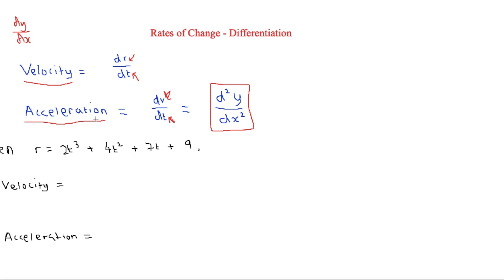So here we have a question, and that's when r, which is going to be the distance, is equal to 2t³ plus 4t² plus 7t plus 9. First of all, what is the velocity?